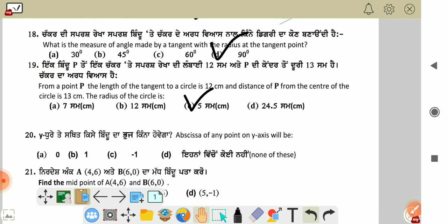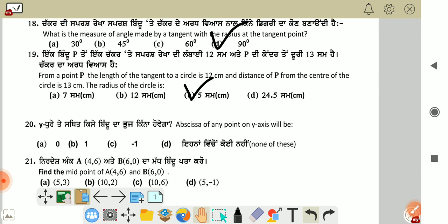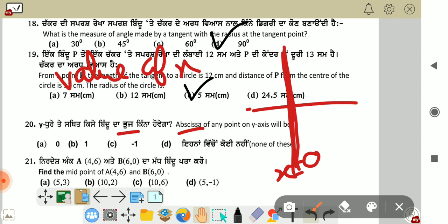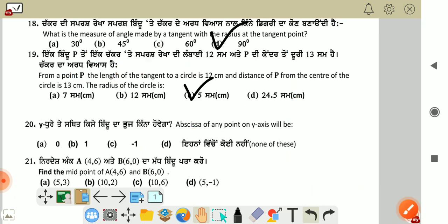Abscissa of any point on y-axis. Abscissa means the value of x. On the y-axis, the x value is always zero. On the x-axis, the y value (ordinate) is zero. Now see, we're asked about y-axis, so the answer is zero, which is A option.